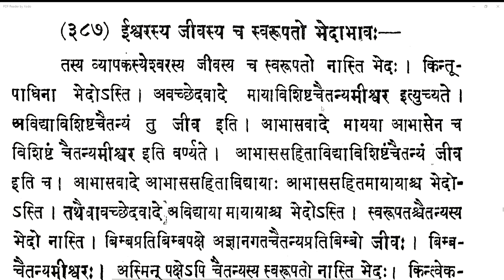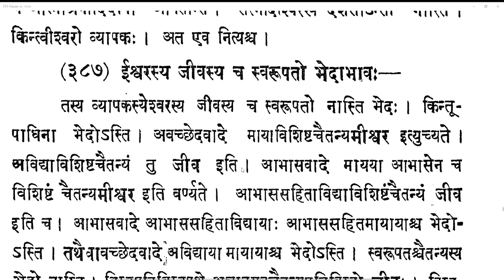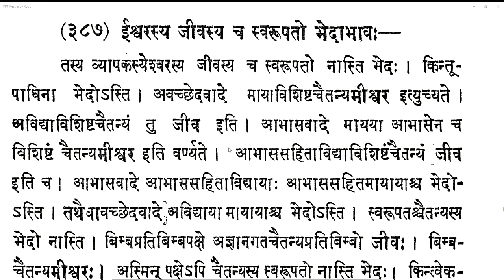So in avacchedavada: maya vishishta chaitanyam is Ishvara iti uktate; avidya vishishta chaitanyam is jiva. Based on the vada, the segmentation of brahma chaitanya in keeping with the pratiti is explained. The explanation may be different; each explanation may not suit every sadhaka, so various prakriyas explain it differently. Whichever suits you, take that — but remember the differences are pratiti matra, they don't make it real.